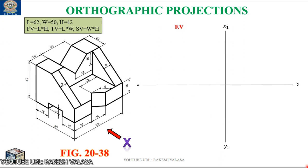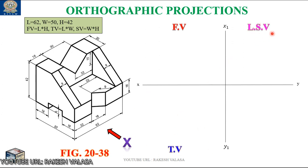Next, I identify the positions: front view in this space, top view in this space, and side view in this space. Because for this problem, he has given the left side view, that is to the right side of the front view.